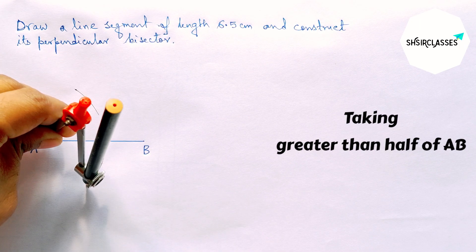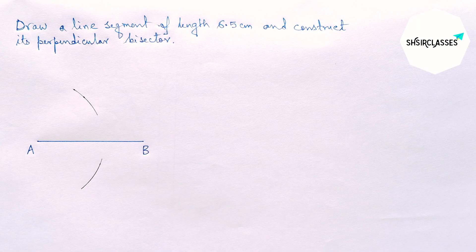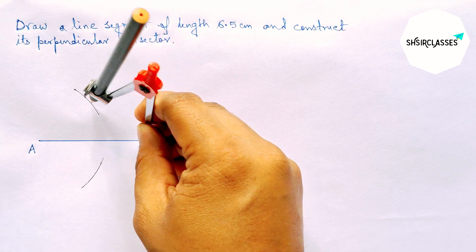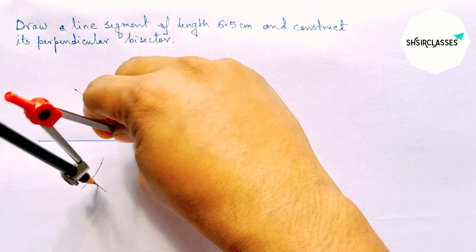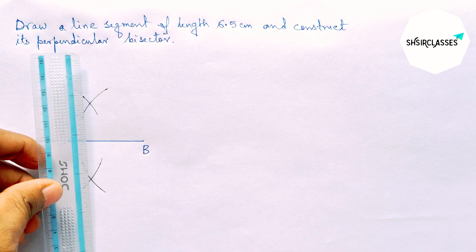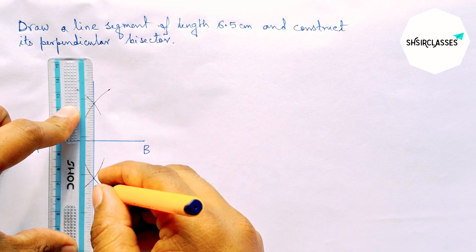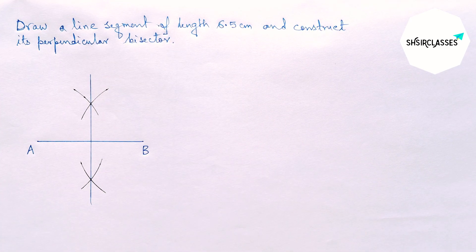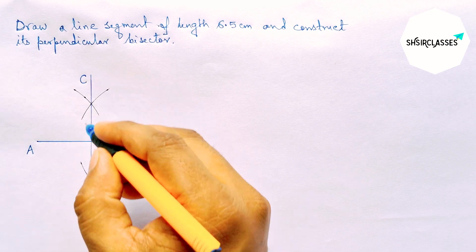Drawing arcs this way, then again with the same length, putting the compass on point B and cutting arcs here and here. Next, joining these two intersection points — and this is the required perpendicular bisector.